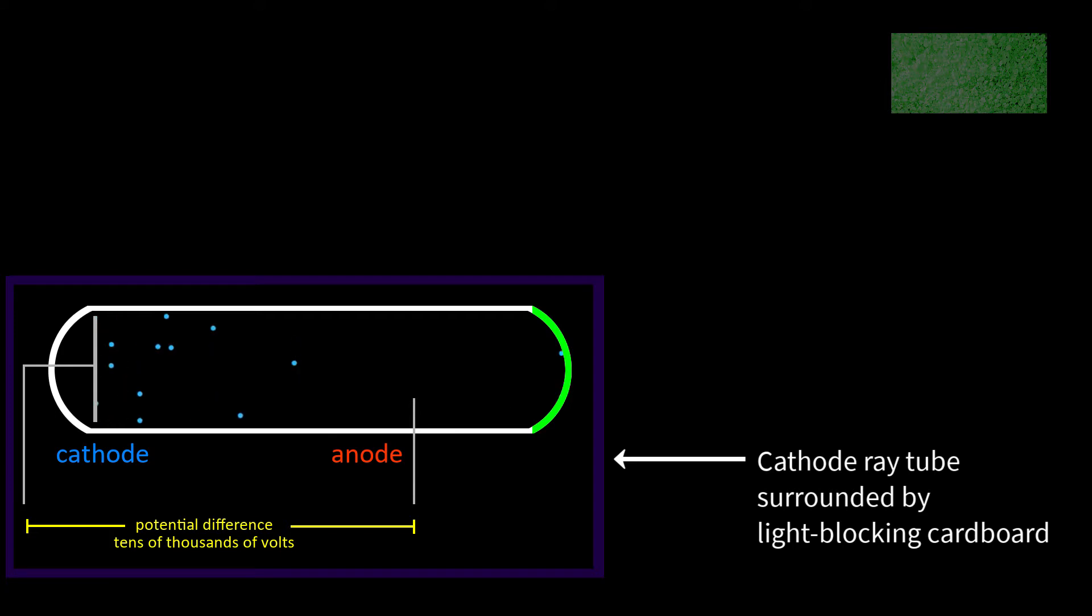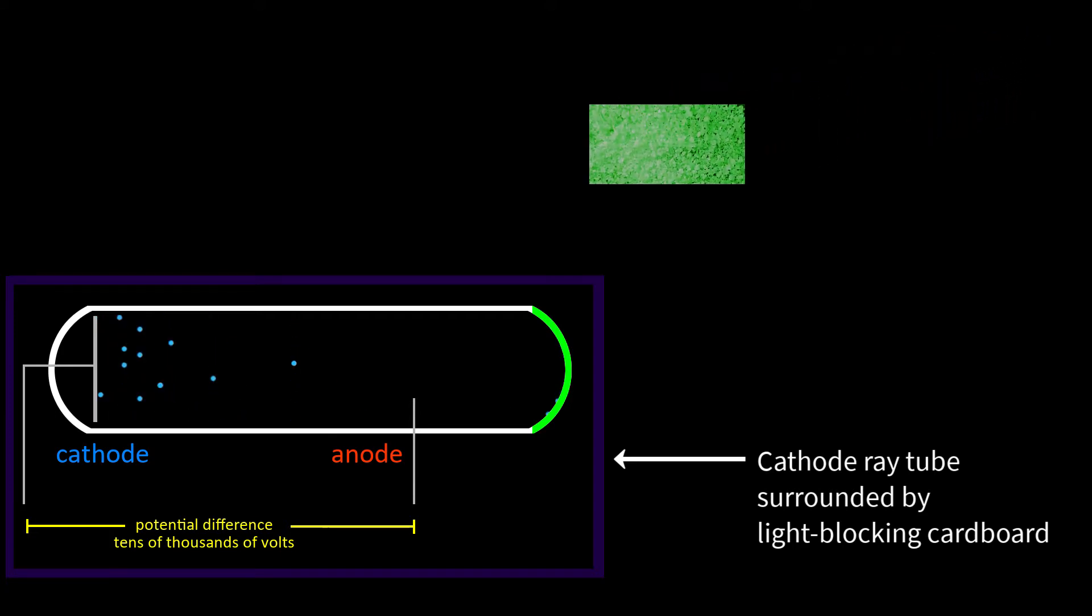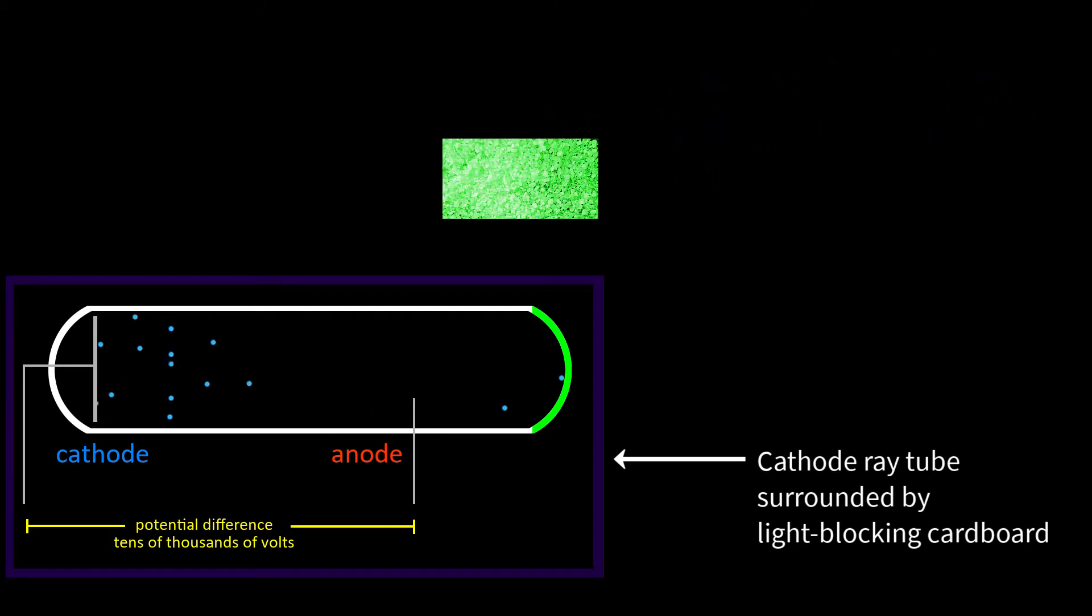If he moved the platinocyanide closer to the tube, the crystals glowed brighter. The crystals would have turned a dark red if given enough exposure to X-rays, but Röntgen tended not to take note of colors. He was red-green colorblind.